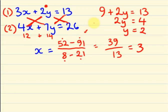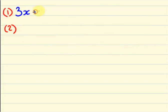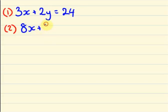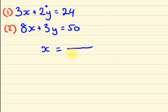Let us see another example using the same method. I am writing: 3x + 2y = 24 as my first equation, and 8x + 3y = 50 as my second equation. We have to identify the x value. So x is equal to: the y component of the first equation 2 multiplied by the right-hand value of the second equation 50 — that is 2 into 50 is 100 — minus 24 into 3.